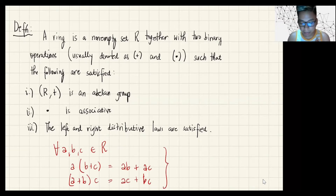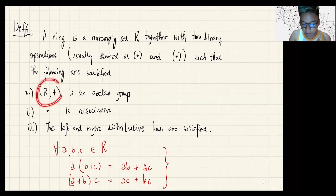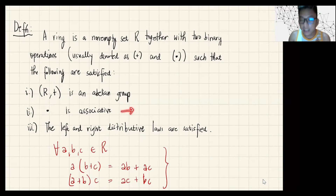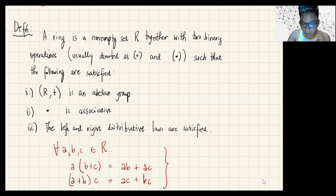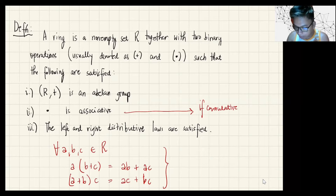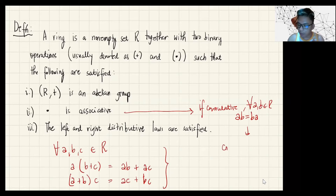Observe that it is a requirement for a ring that with respect to the addition operation it should be an abelian group, meaning it's commutative. However, with respect to multiplication, it need not be commutative. But in the event that multiplication is commutative — so that AB equals BA for every A and B in R — then we call this a commutative ring.